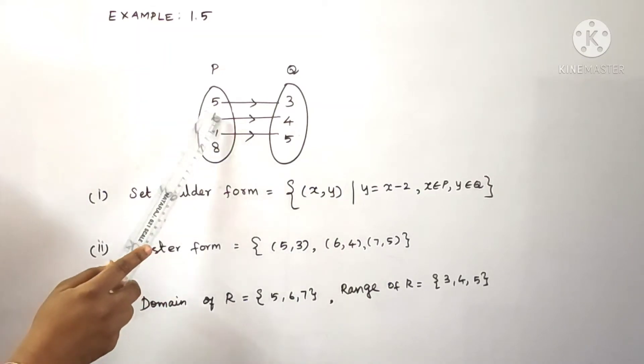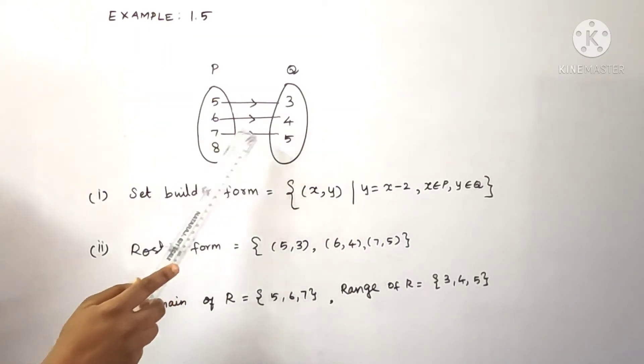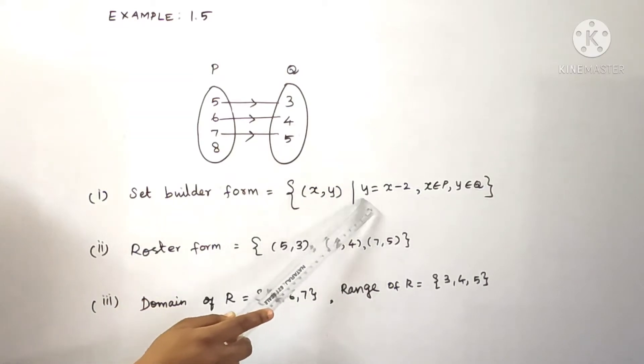For example, 5 squared is 25. 6 squared is 36. 7 squared is 49. So y is equal to x square. We need to define it.